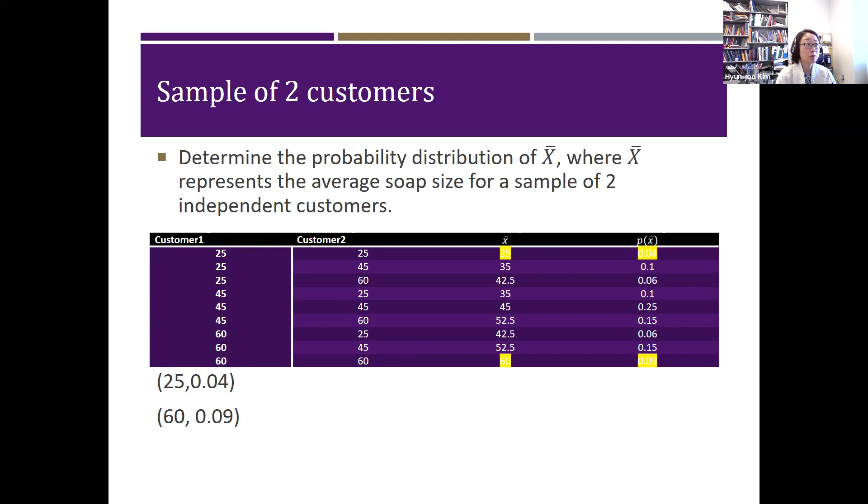So you kind of need to think about all the possible cases that they can buy the dishwasher soap. So the first scenario is the first customer buy 25 ounce, second one also buy 25 ounce, then 25 and 45, 25 and 60, 45 and 25, up until 60 and 60. Okay, so in a way the customer one has three choices: 25, 45, 60. Customer two also has 25, 45, and 60, three different choices. So you think about all the possible cases, three times three, which is nine different cases, all the cases that you can come up with.